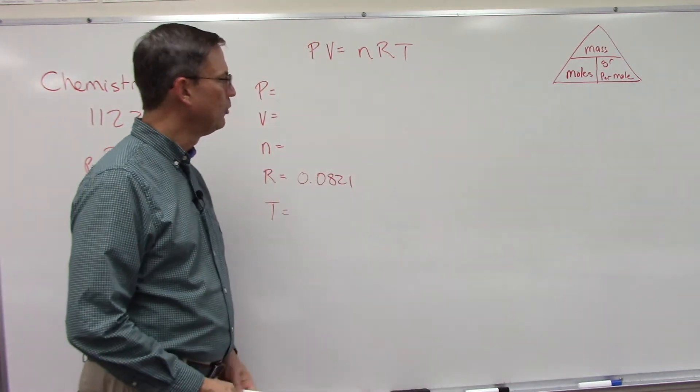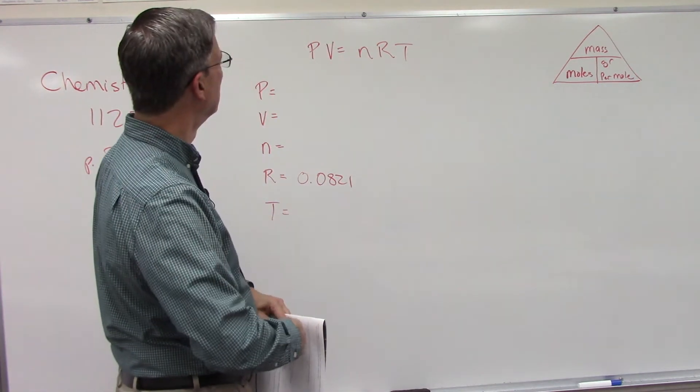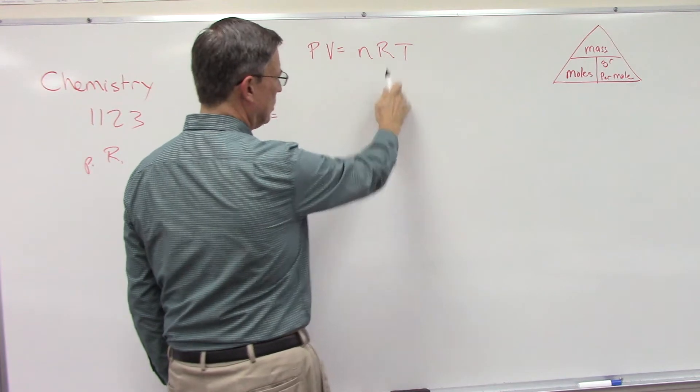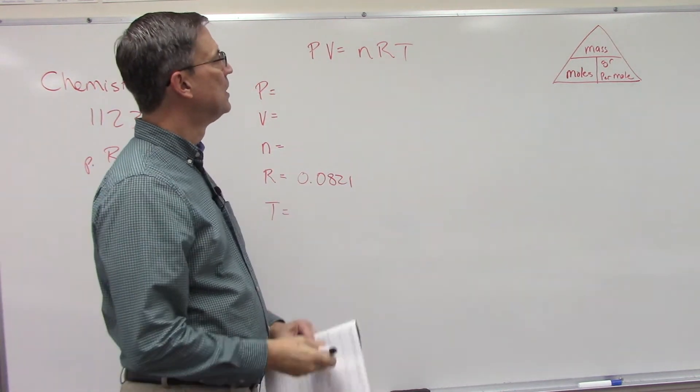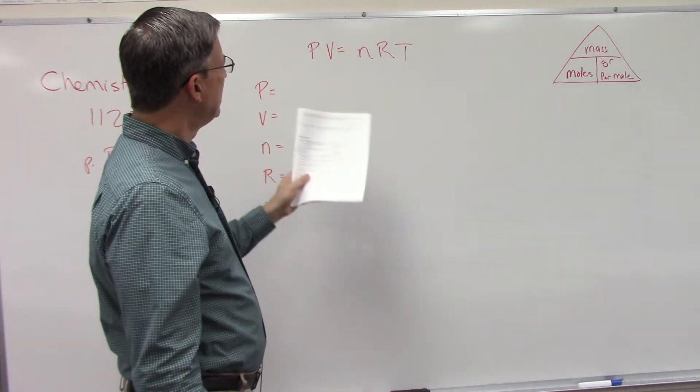Let me grab my black marker here. This is the formula we want to use: PV = nRT. That was the new formula they gave us, it's called the ideal gas law. So we need to read this problem...